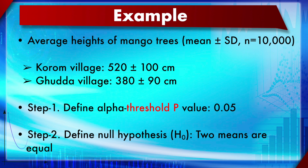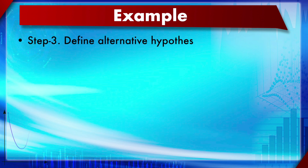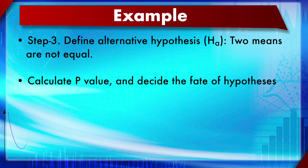An example: comparing average heights of mango trees (mean ± SD, n = 10,000) in two villages. Corom village: 530 ± 100 cm; Khuddha village: 380 ± 90 cm. Step 1: define threshold p = 0.05. Step 2: null hypothesis — mean of group 1 equals mean of group 2. Step 3: alternative hypothesis — mean 1 is not equal to mean 2. Step 4: calculate the p-value and decide the fate of the experiment.